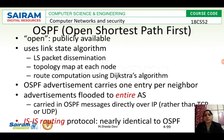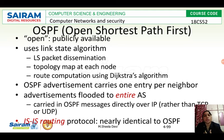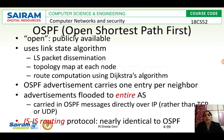How can we find the shortest path within the autonomous system? We are going to use the link state routing algorithm. In RIP we used distance vector routing algorithm, whereas in OSPF we are going to use link state routing algorithm. Link state is nothing but Dijkstra's routing algorithm.